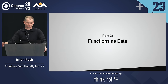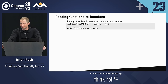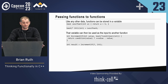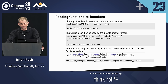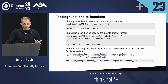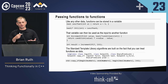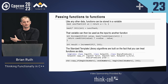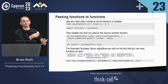Next part: functions as data. You can pass functions to functions — this has been around since C, which we can thank for the amazing syntax for declaring a function pointer. Here we've got a less_than_five function we can store in a variable and pass to different functions. Standard template library algorithms are pretty much built on this concept — our algorithms do something and then call some predefined function we give them to do something in accordance with that algorithm.